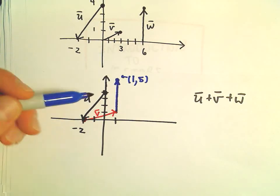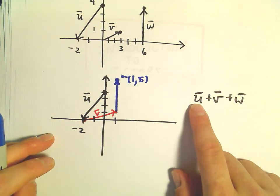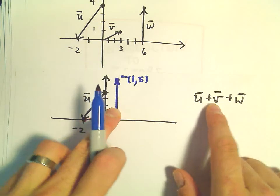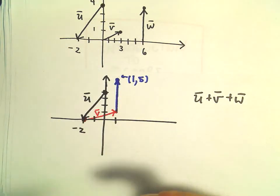Okay, so it's kind of like you're taking a little walk. Walk along u, and then v tells you the direction to go next, and then w tells you the direction to go next.